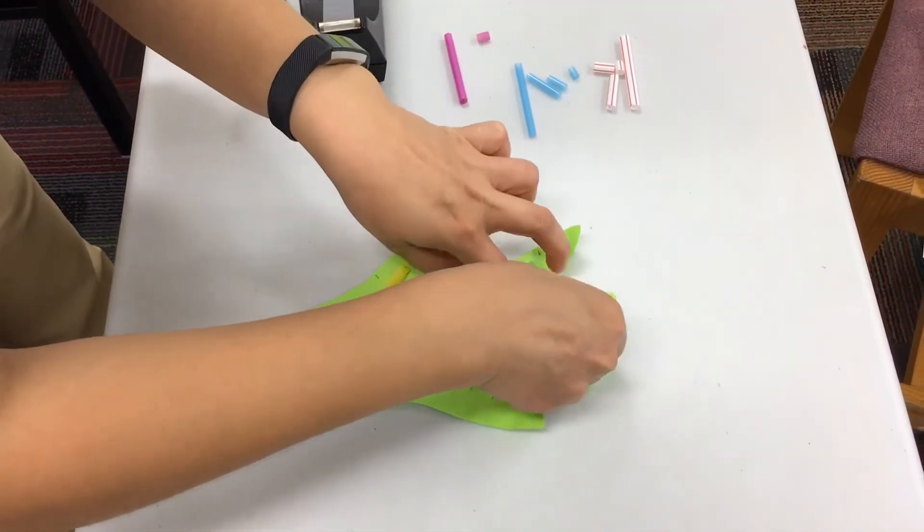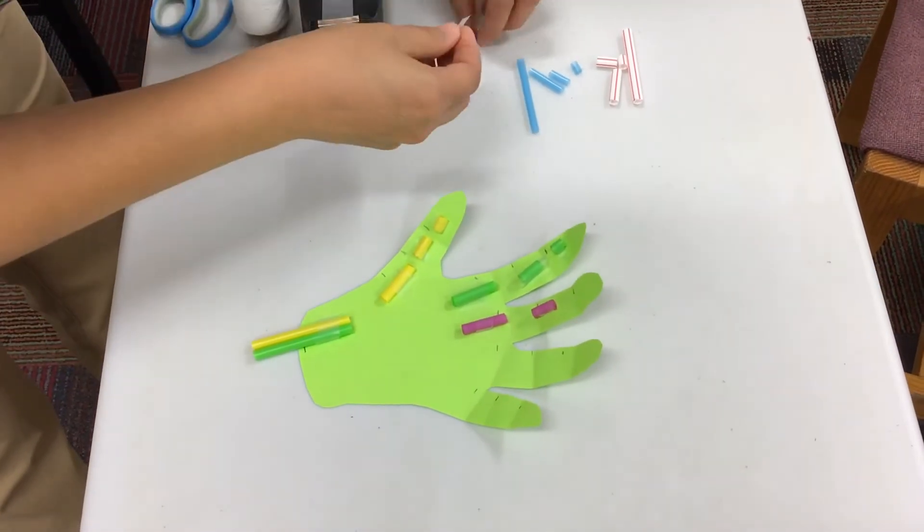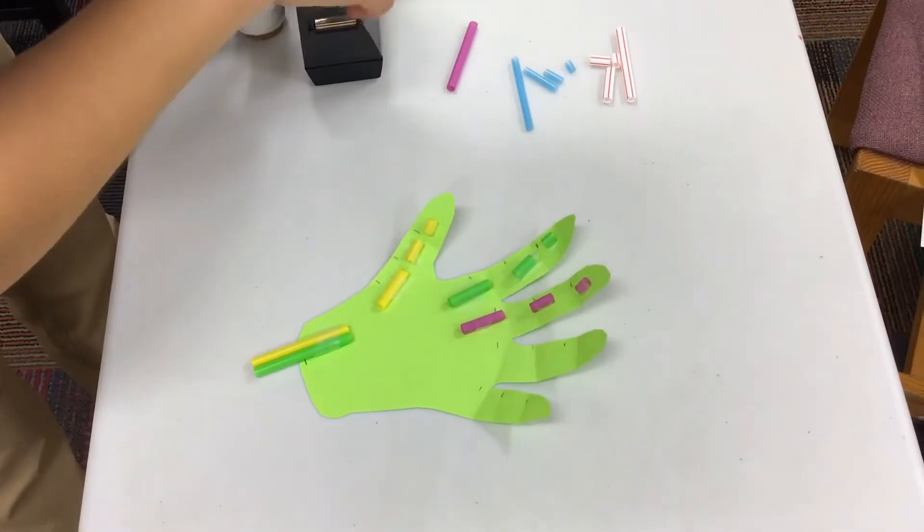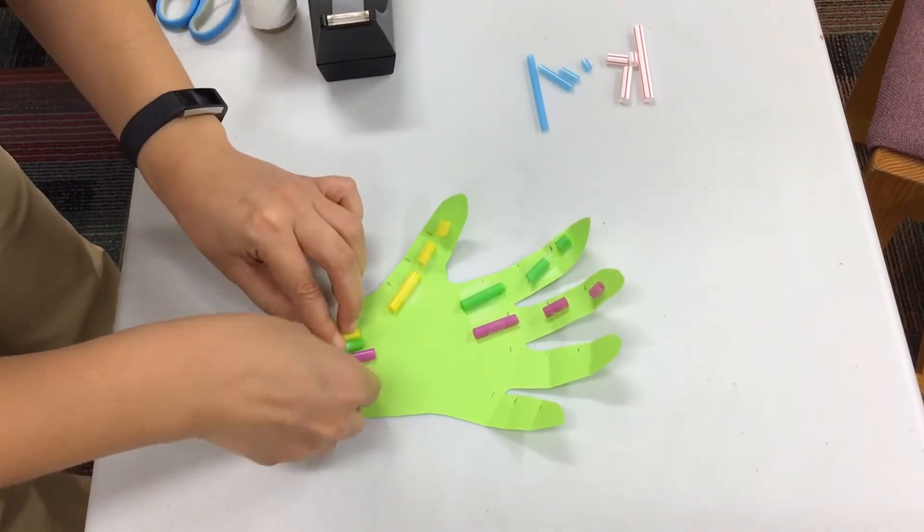For the biggest straw pieces that go at the wrist, you can choose to tape them at the end since they all go together or you can tape them as you go like we did here.